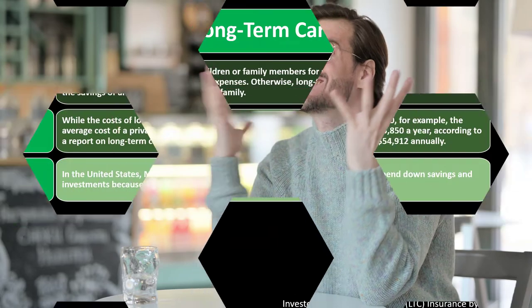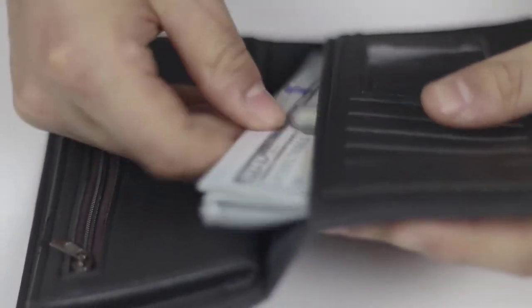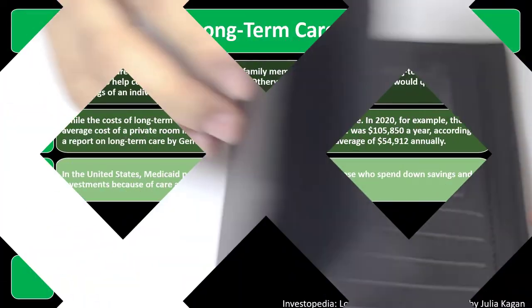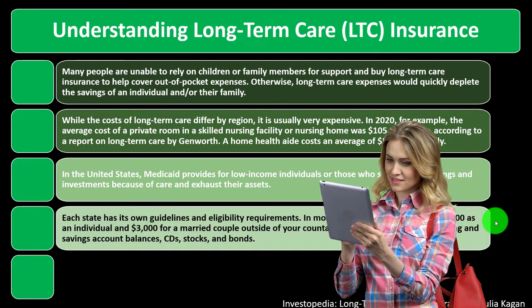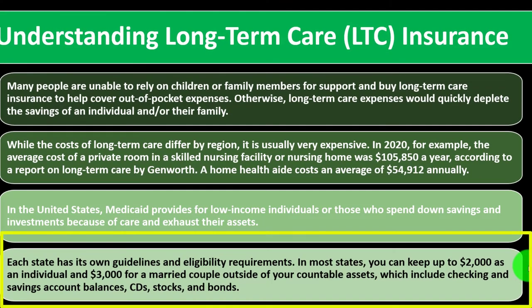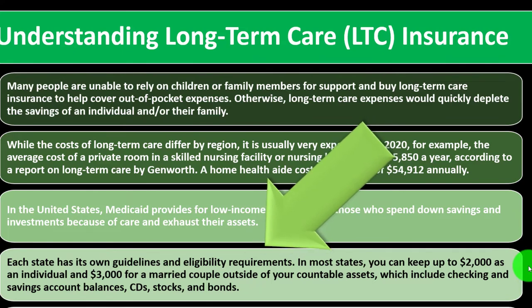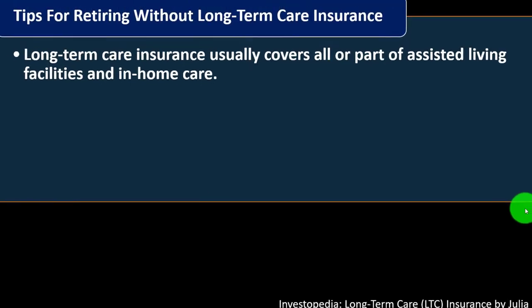Medicaid has requirements in terms of asset and income levels. If you're above those levels and don't have other options, you might have to deplete your assets to qualify — which is not a desirable situation. Each state has its own guidelines. In most states, you can keep up to $2,000 as an individual and $3,000 as a married couple in countable assets such as checking and savings accounts, CDs, stocks, and bonds. Your home, car, personal belongings, and savings for funeral expenses don't count.